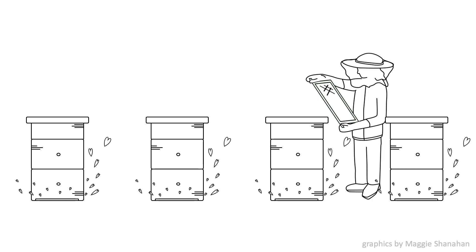Beekeeping is the practice of tending to these bees. That means different things in different contexts. People manage colonies for honey production, to pollinate crops, to connect with the natural world, and for a variety of other reasons.